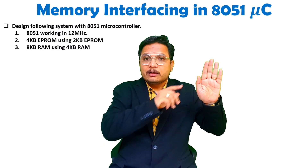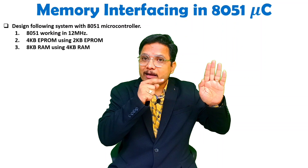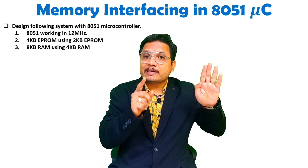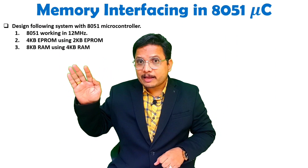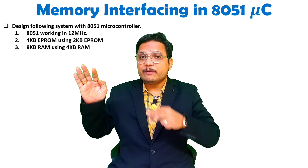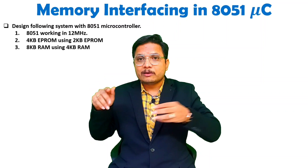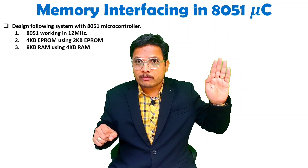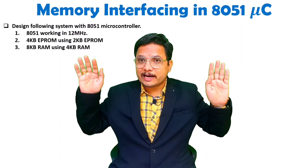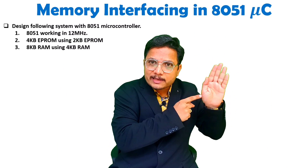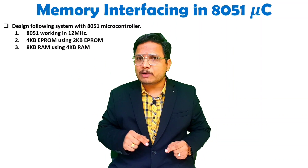With 8051, for program memory — ROM — we provide memory read using the PSEN bar control signal. With data memory — RAM — we have two separate control signals for read and write: RD bar and WR bar. So when you interface ROM it is for program, and when you interface RAM it is for data. This is the first essential thing you must know.